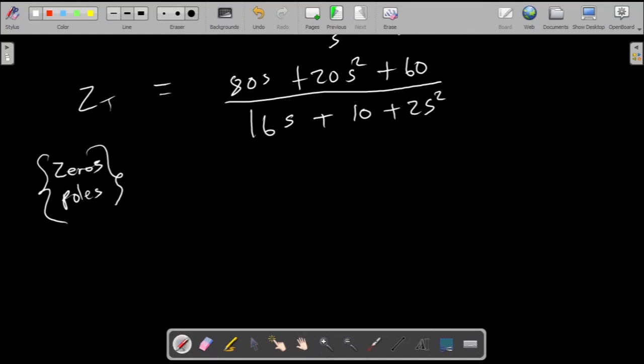To see how they can take us to what we're looking for, the largest common denominator at the top would be 20. Taking 20 out we have s squared, that's 4s plus 3. Then at the bottom the largest one would be 2. Taking 2 out we have s squared plus 8s plus 5.